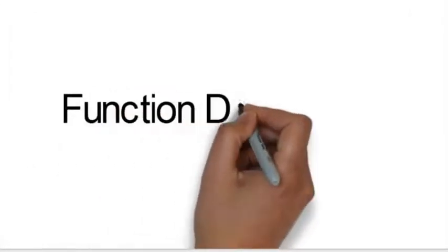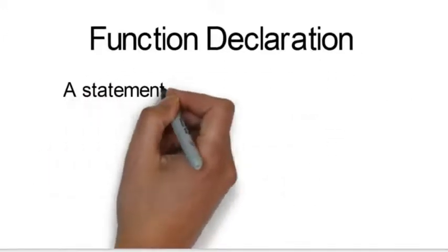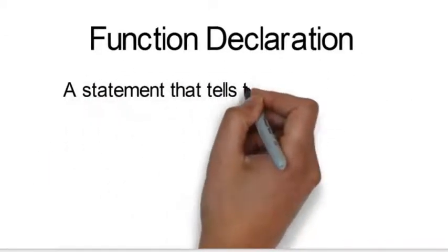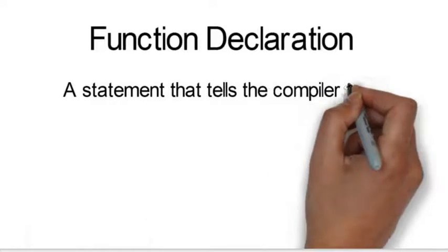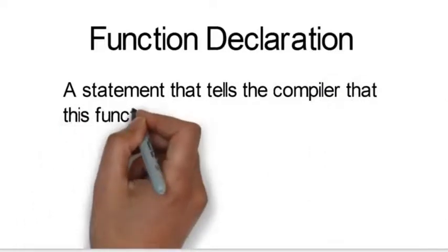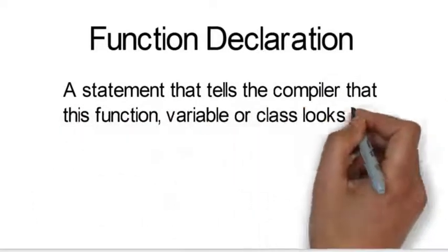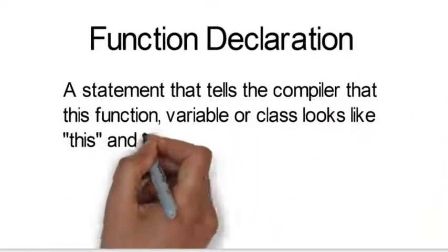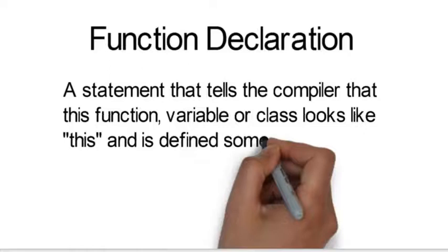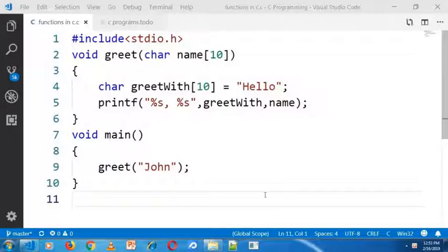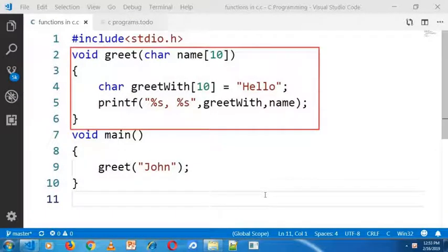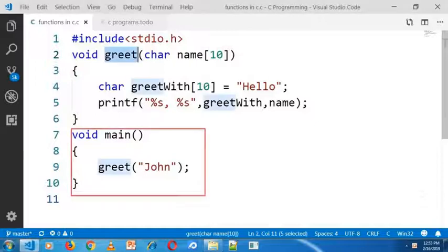Function declaration. A function declaration is a statement that tells the compiler that this function, variable, or class looks like this and is defined somewhere. In this program there are two functions: one is greet and another one is the main function.